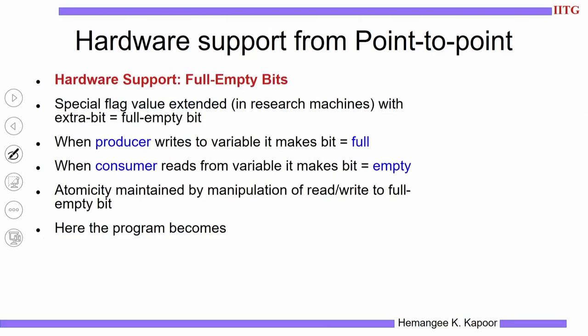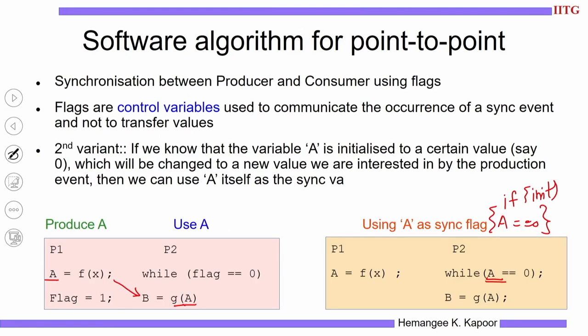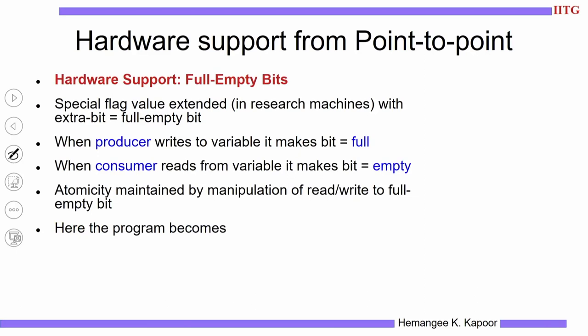How do you do this in hardware? We need to establish a connection between P1 and P2. In hardware there is no concept of two processes — hardware only sees memory items and instructions. So we can use storage or memory and attach extra bits to variables. This extra bit is called the full and empty bit. Initially the variable is declared empty because the producer has not produced it. When the producer writes to A, we set the bit to full.